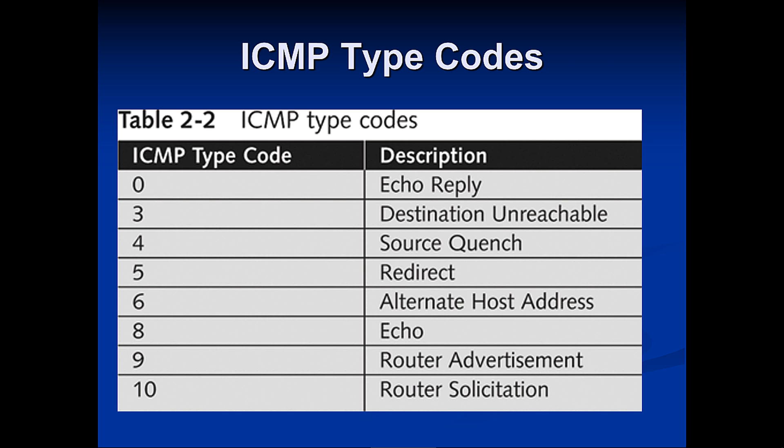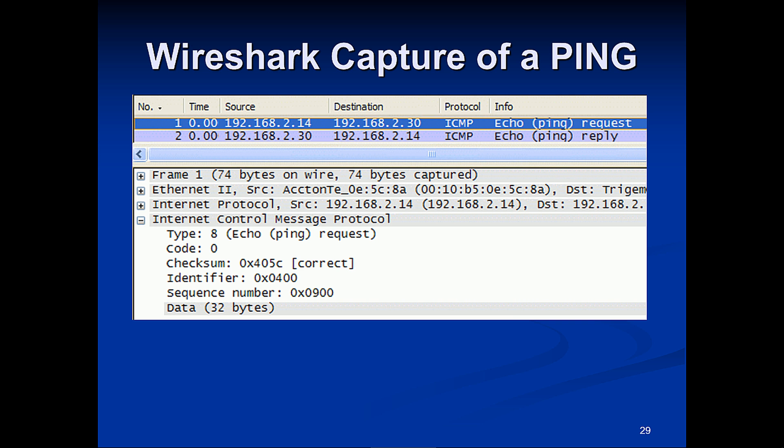In a Wireshark packet capture, we can verify this — we see that a packet is Type 8, and so we know that is an echo. And that's it for our TCP overview.